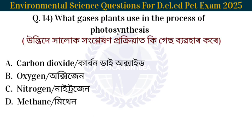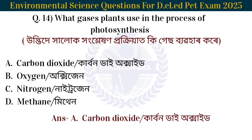Next question: What gas do plants use in the process of photosynthesis? Udbidhe halufongleson prokiat kii gas bhebohar kore. The answer is carbon dioxide. Plants use carbon dioxide gas in the process of photosynthesis.